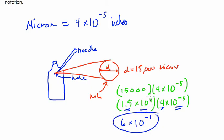And this is our answer. They want it in scientific notation, so we're all set. 6 times 10 to the negative 1 inches. So that's the diameter of the hole that we've drawn, measured not in microns, but in inches. Thank you.